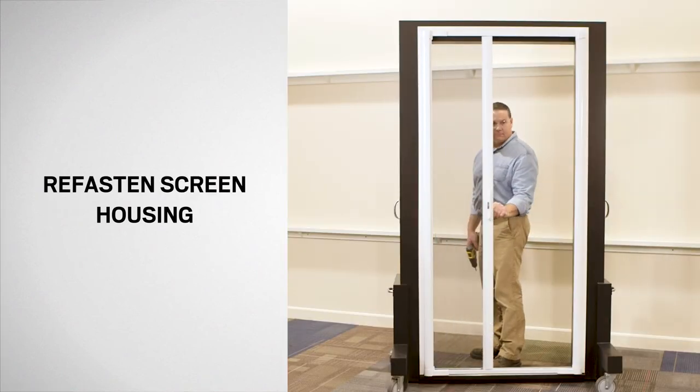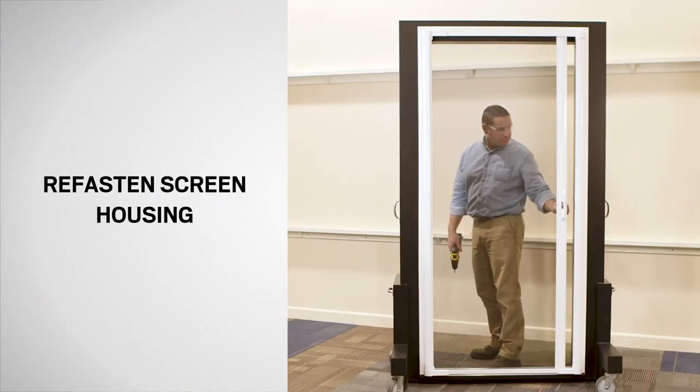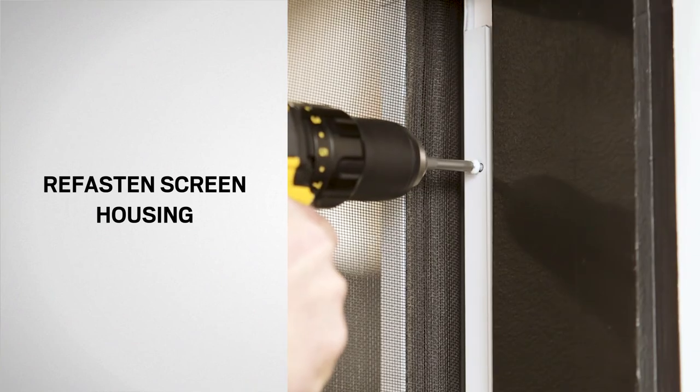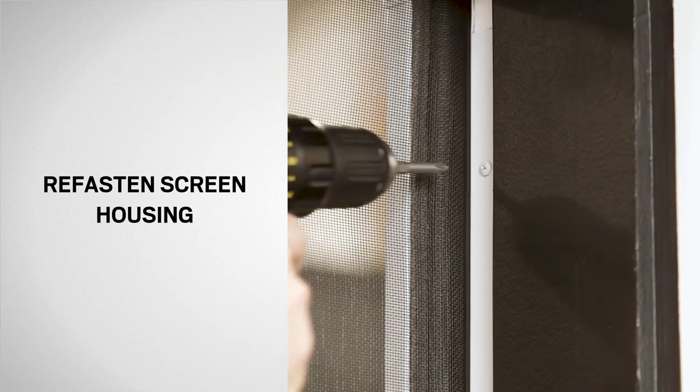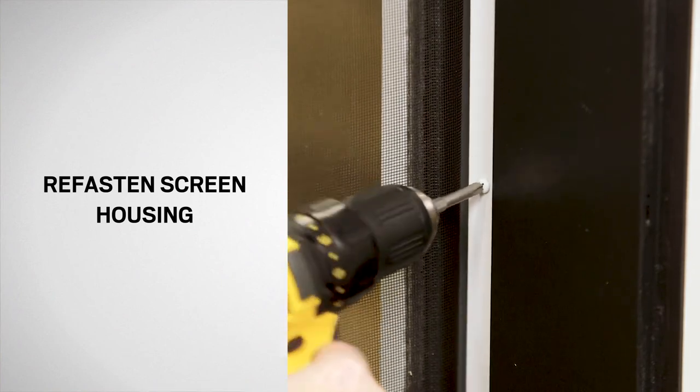Next, extend the insect screen and latch. Then, secure the screen side flange with the previously removed screws. Be careful not to over tighten.